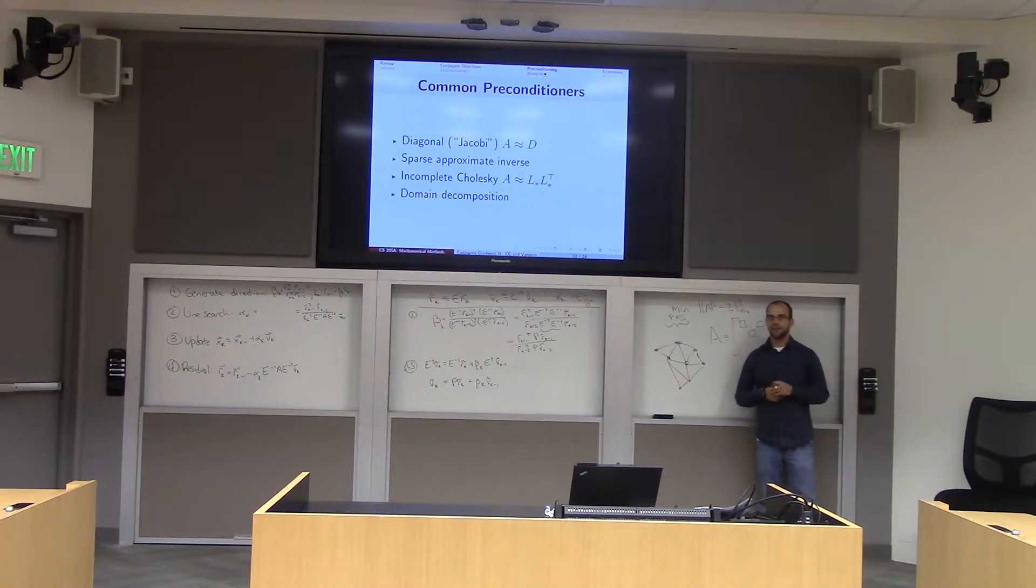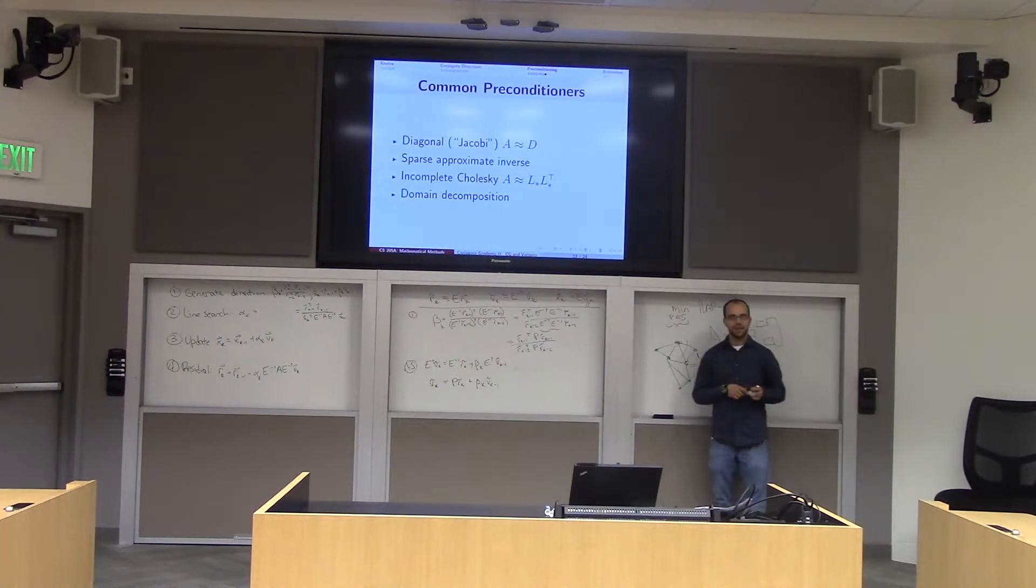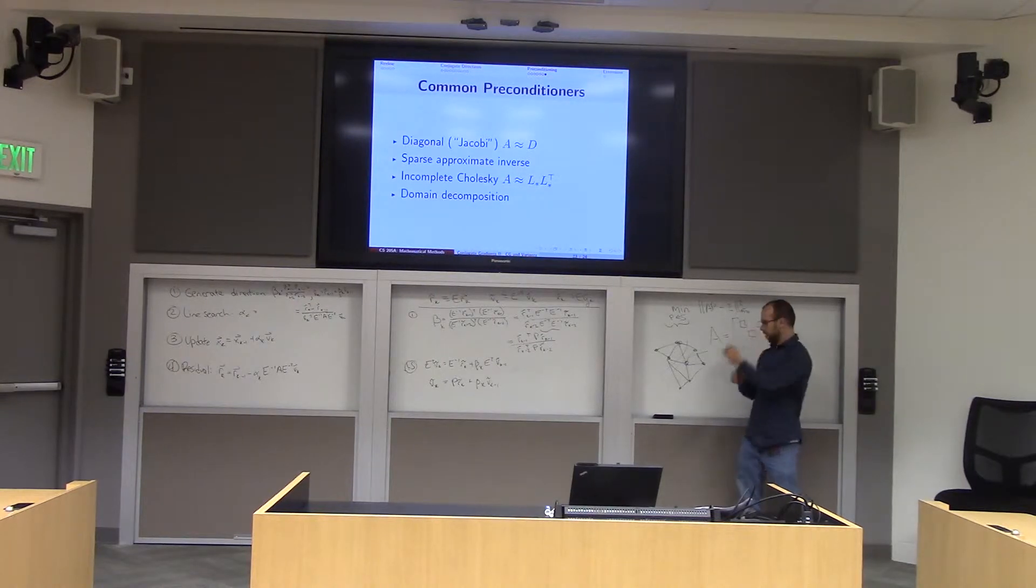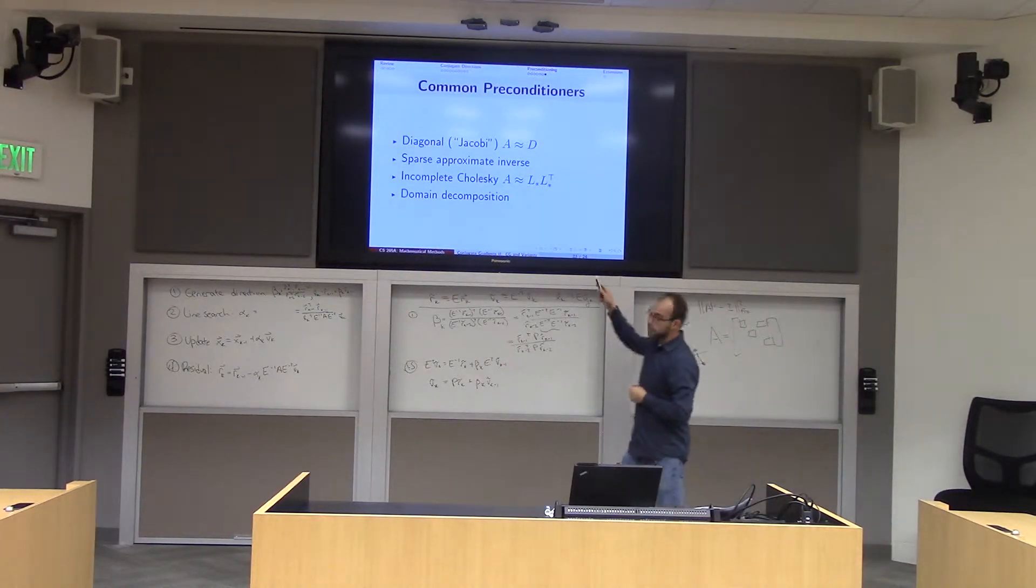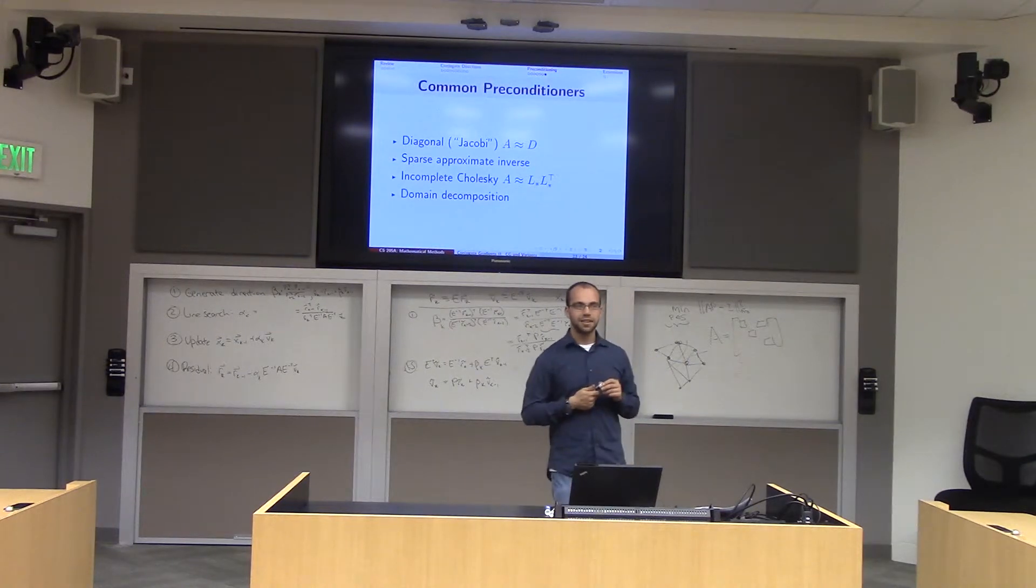So one thing you can do would be to try to solve a graph theory problem. For example, you can try and cut this graph into different pieces. And then effectively, what that does is it makes a bunch of small linear systems out of AX equals B because you remove the relationship between different parts of this domain. This is called domain decomposition. You just kind of break it into pieces and you solve these approximate sub-problems as you're preconditioning.